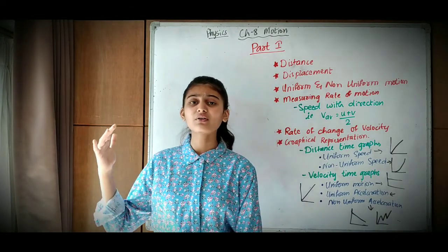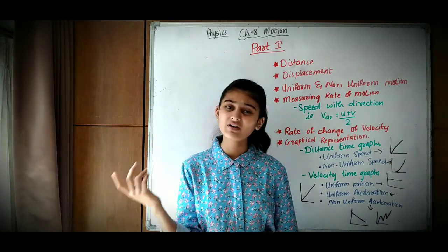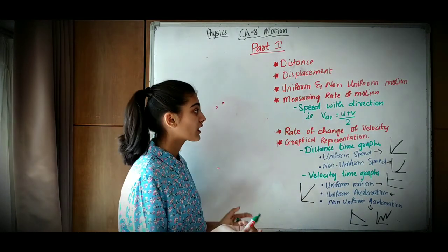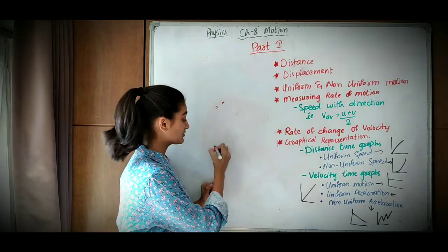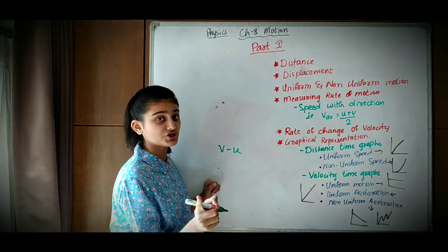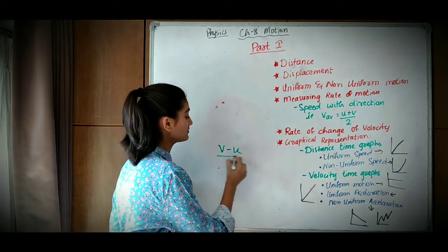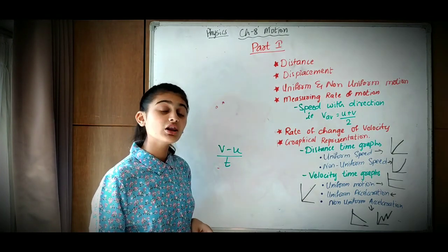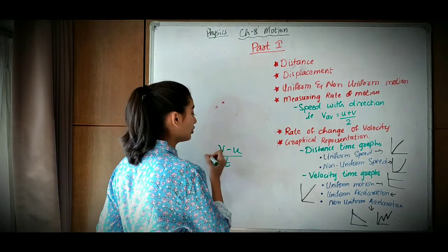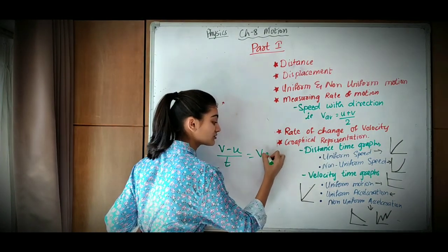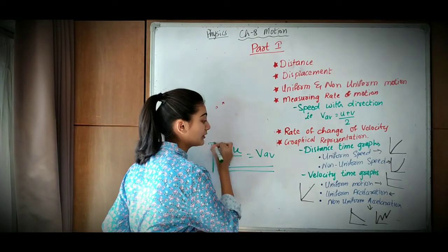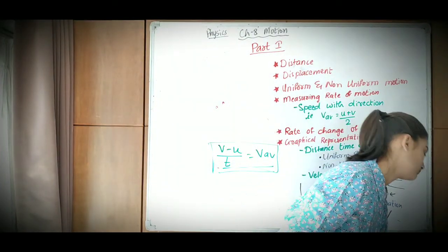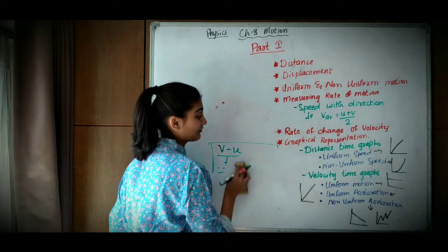Then comes the rate of change of velocity. The rate of change of velocity — meaning final velocity minus initial velocity — divided by time gives us the rate. This is how we can calculate the rate of change of velocity, which is also related to average speed.